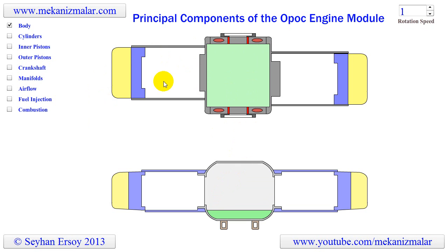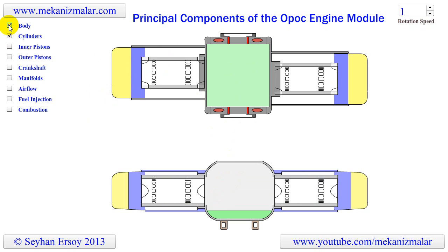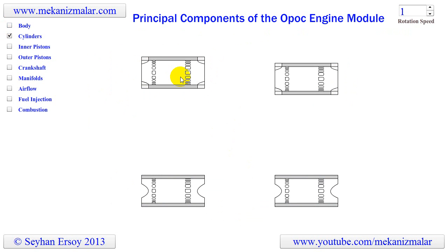Two opposed cylinders are located at the opposed ends of the engine. As you can see, the cylinders contain openings for the inlet and exhaust gases.